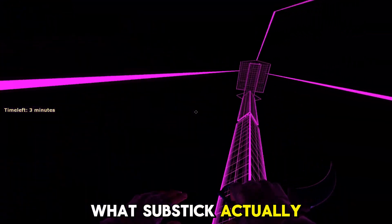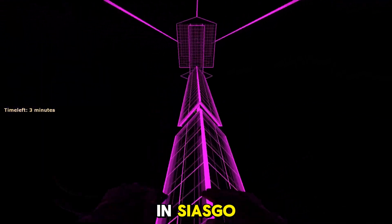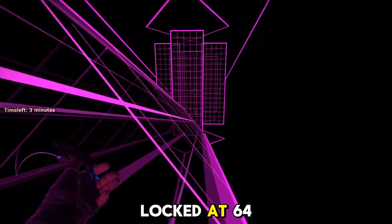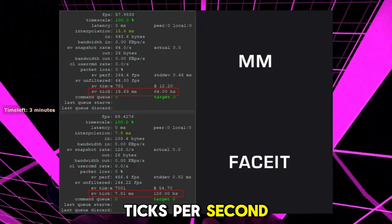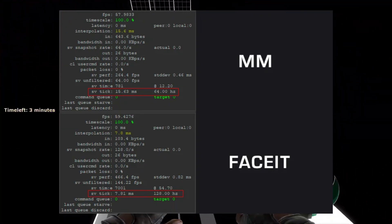What substick actually means: In CSGO, server updates were locked at 64 ticks per second, or 128 on FaceIt. That meant every game action had to happen within the tick window.